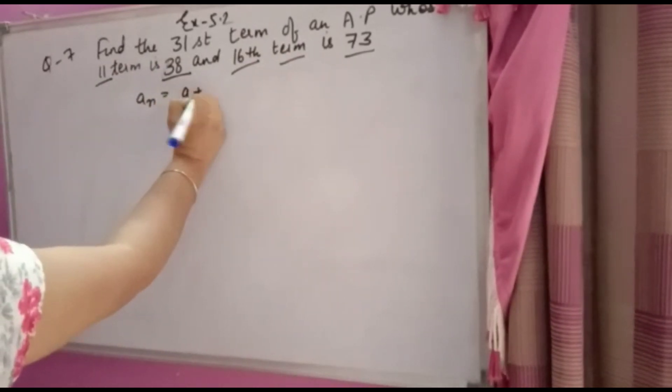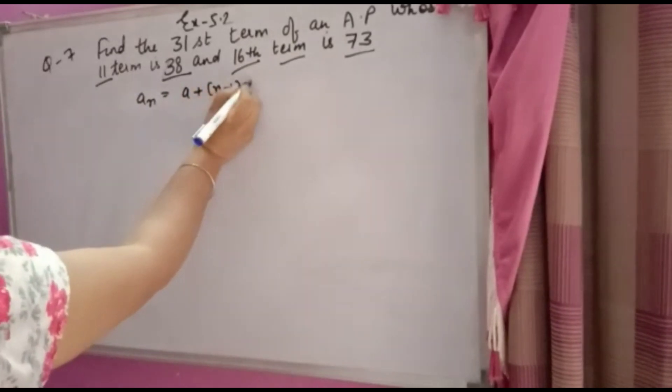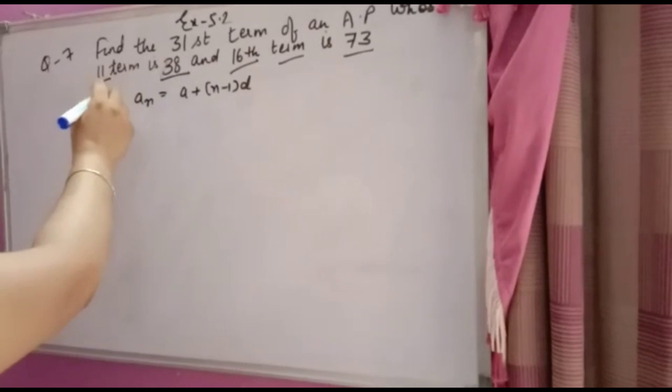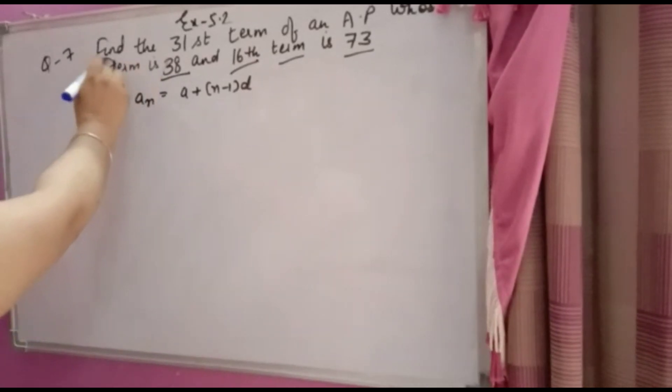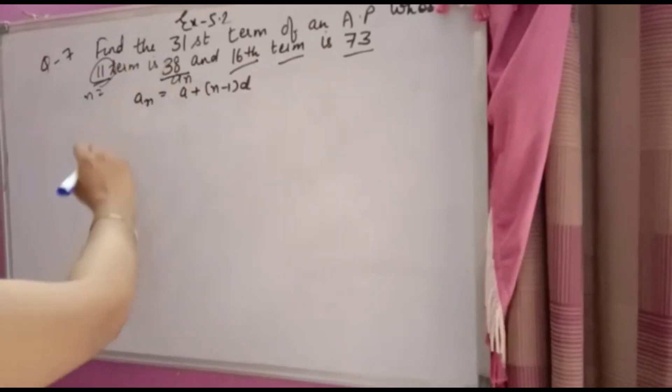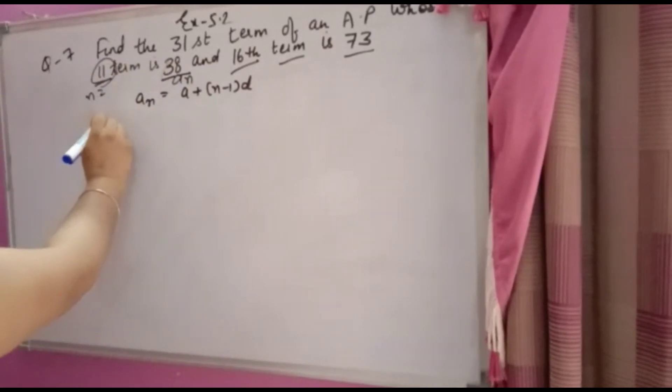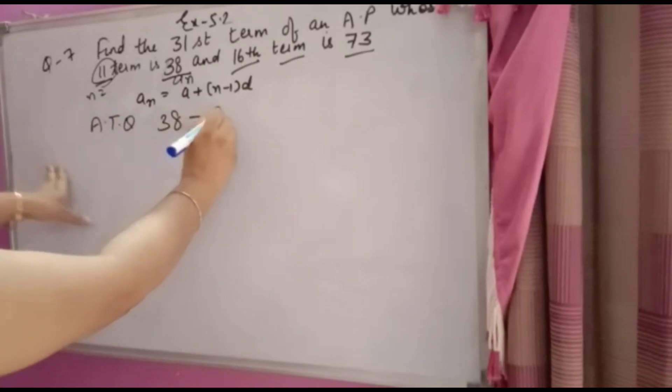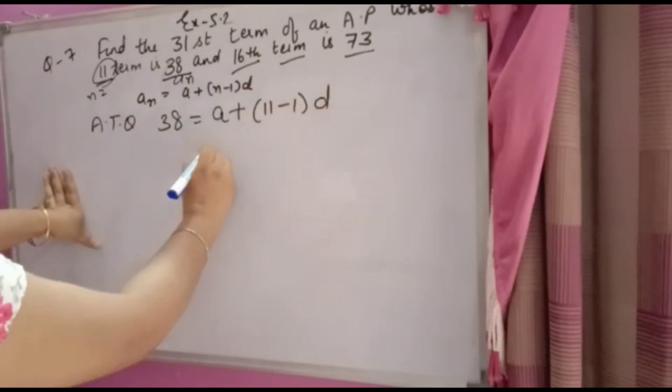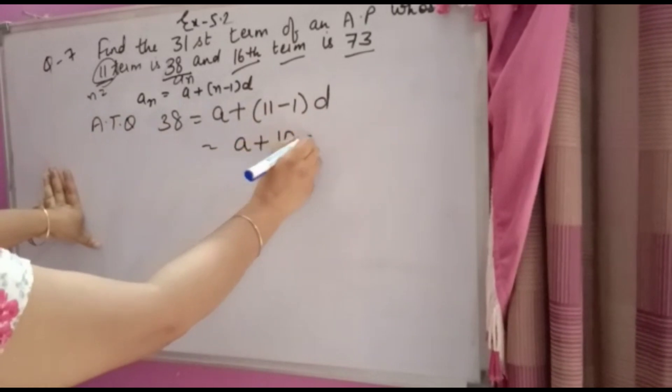You know that AN = A + (N-1)D. This question is very important, so see carefully. For the 11th term, N = 11 and AN = 38. According to the question, 38 = A + (11-1)D, so A + 10D = 38.